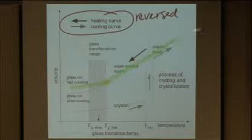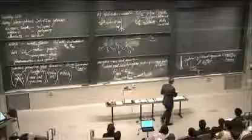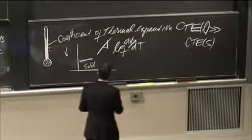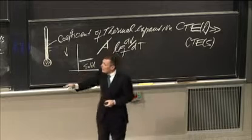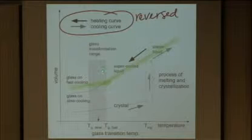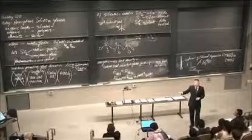You've changed from the slope that's characteristic of the coefficient of thermal expansion of a liquid, down here to the gentle slope coefficient of thermal expansion of solid. You know what this proves? This proves that glass is a solid.